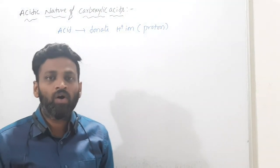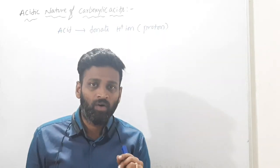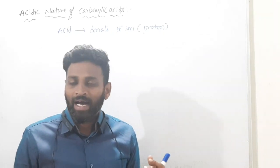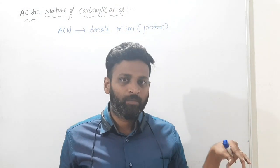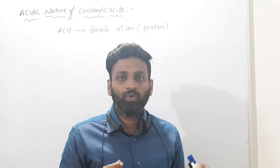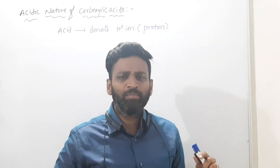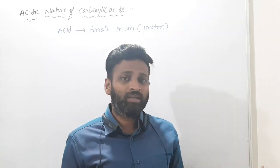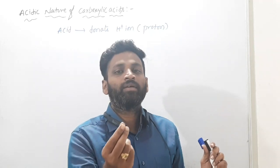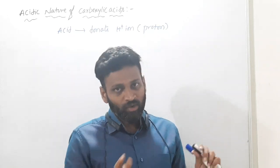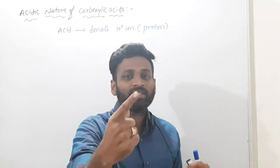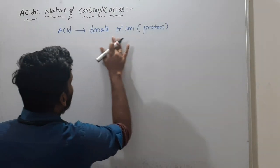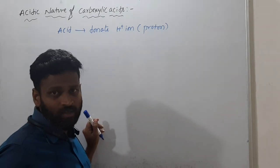According to Bronsted's law, an acid is something that has a tendency to donate H+ ions. H+ means a proton. Who donates H+ is an acid. How do you say whether an acid is strong or weak? Based on the ease of donating H+. Who donates fast is a strong acid — like me eagerly donating 100 rupees versus a friend who hesitates.